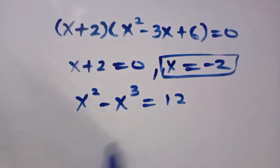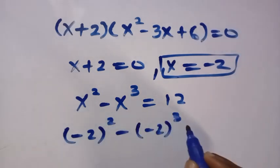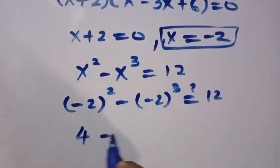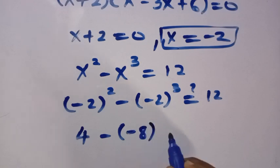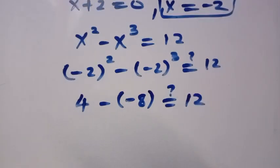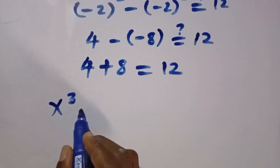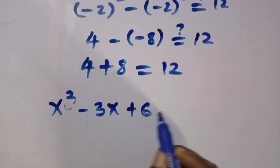Let's substitute x equals minus 2. We have minus 2 squared minus open bracket minus 2 cubed. Minus 2 cubed is minus 8, so this is minus minus 8, that is plus 8, and we have 4 plus 8 which equals 12. So the first solution is confirmed: x equals minus 2. Now we let the other factor x squared minus 3x plus 6 equals 0.